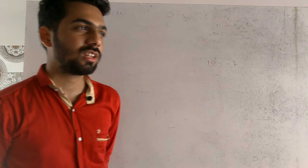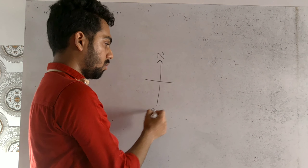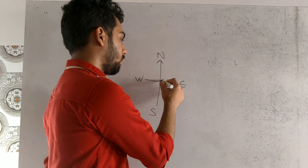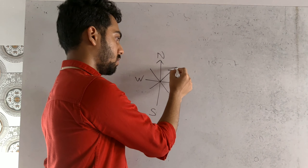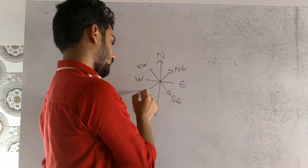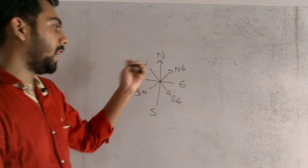Now we will see location and extent. Location and extent refers to latitude, longitude, and hemisphere — northern, eastern, western. We will start with the chapters. Initially, we are having four main directions. The four major directions are: north, south, east, and west. And over the period of time, there are four sub-directions: north-east, south-east, north-west, and south-west. So we have evolved with eight directions total.